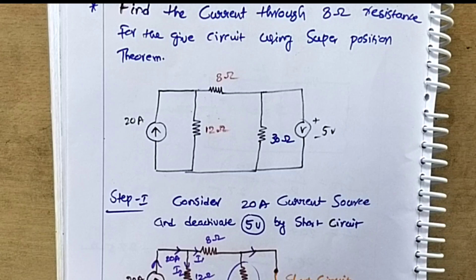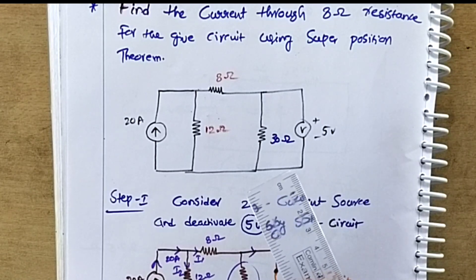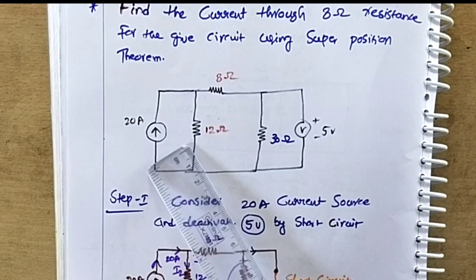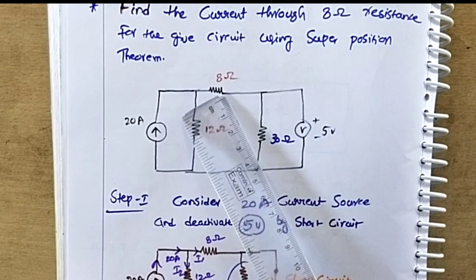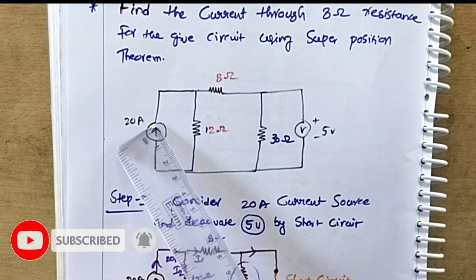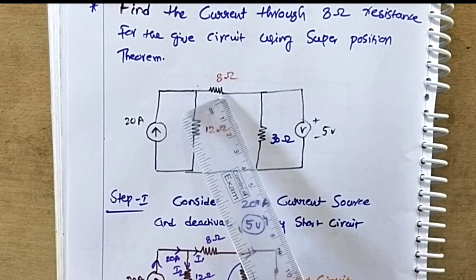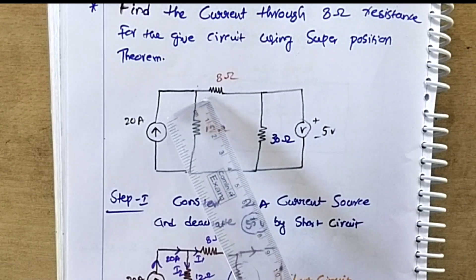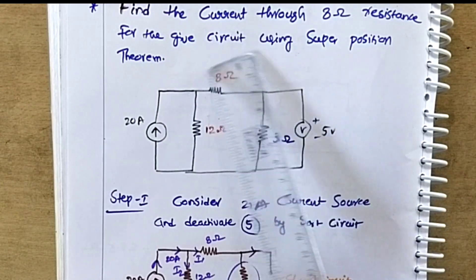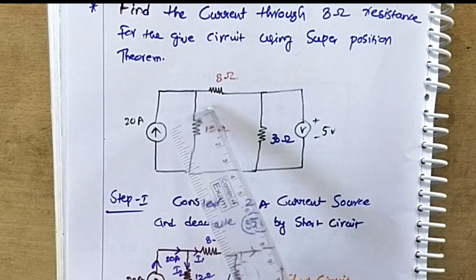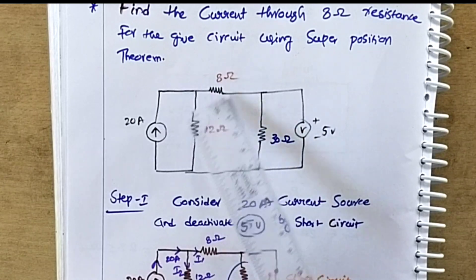Let us consider another example for the superposition theorem. Previously we solved a numerical problem using two voltage sources. Now we go for another type: one current source and one voltage source. The circuit has a 20 amp current source and three resistances — 8 ohm, 12 ohm, and 30 ohm — plus a 5 volt source. We need to find the current through the 8 ohm resistance using the superposition theorem.